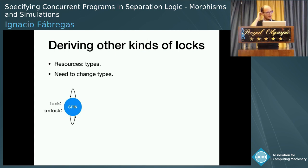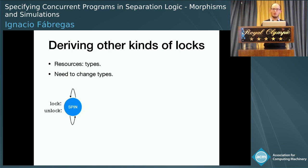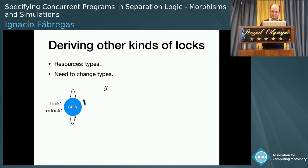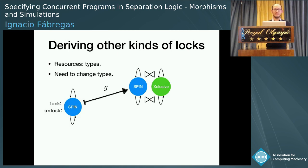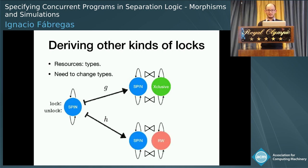What we're doing in our paper is that we are going to use morphisms in order to derive other kinds of locks or other kinds of programs from some other ones. For example, here we have lock and unlock in a spin, and since our programs have some type, we will need something to change the types — and this will be our morphisms. With this spin lock we might want to implement an exclusive lock with mutual exclusion, or from that same spin lock implement a non-exclusive lock like readers-writers, where many users can read a field but only one can write.